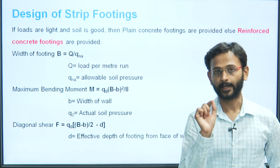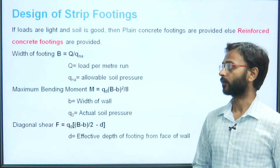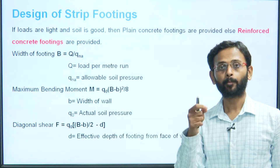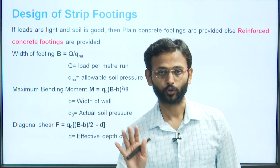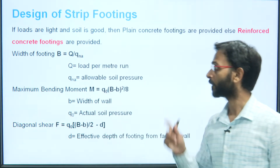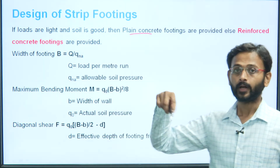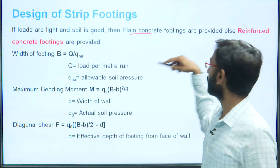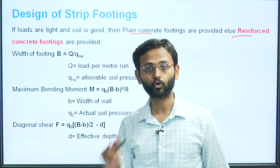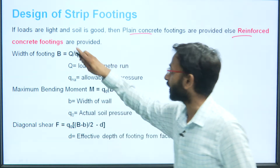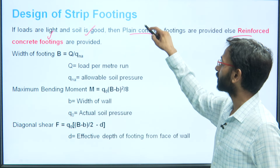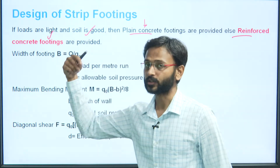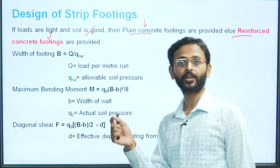We now consider two cases: design of strip footing and design of spread footing. For strip footing, two cases are possible: plain concrete (no reinforcement) — when loads are light and soil is good — or reinforced concrete. If loads are heavy or soil is not adequate, reinforced concrete footings must be provided. The width of the footing is given by B = q/q_na, where q is the load per meter run and q_na is the allowable soil pressure.